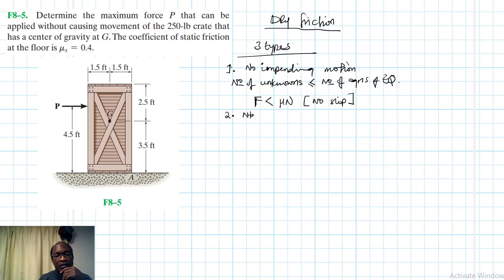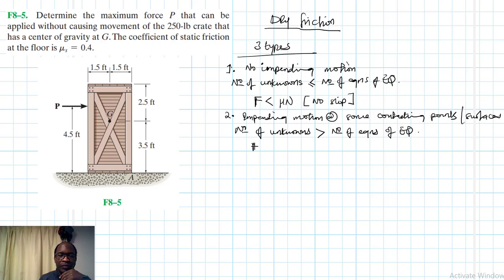The second problem is where we have impending motion at some contacting points or surfaces. In this case, the number of unknowns are more than the available equations of equilibrium. And therefore, we are going to be forced in this particular case to invoke the friction equations.